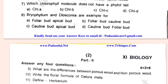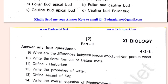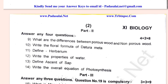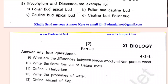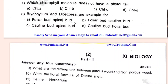Next is Part 2 — the 2-mark questions. What is the difference between porous wood and non-porous wood? Write the formula of Datura metal. Different types of herbarium, properties of water and soft sap, and the overall equation of photosynthesis.